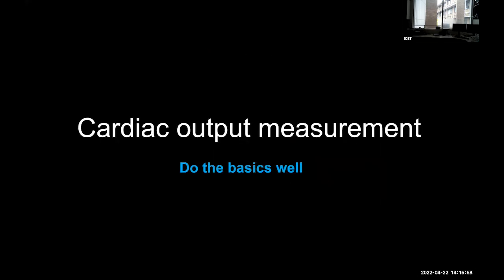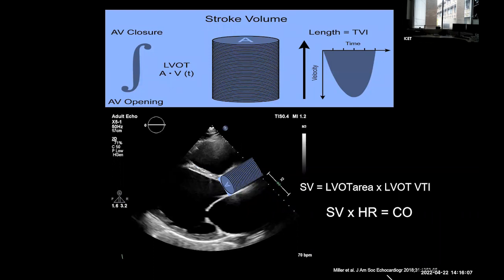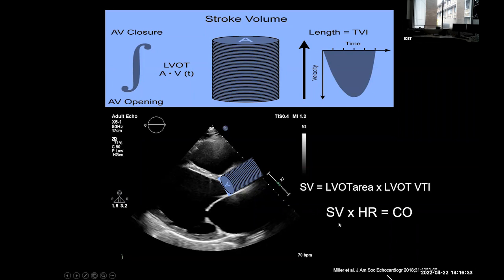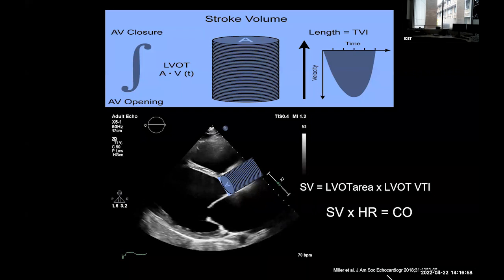For cardiac output measurement, the basics must be done well. Stroke volume equals LV outflow tract area times the stroke distance — the velocity time integral (VTI) — essentially how far the blood has travelled, being velocity integrated over time. We make a cylinder, multiply area by distance to get stroke volume, then multiply by heart rate for cardiac output. Simple maths, but it makes a lot of assumptions. Whether the LVOT is truly circular is debatable, but for all intents and purposes this is the gold standard using echo, especially when using it for trends.